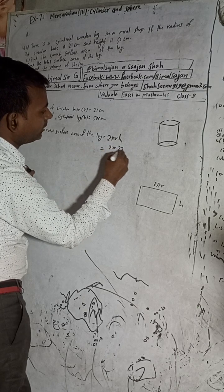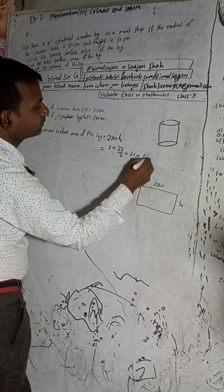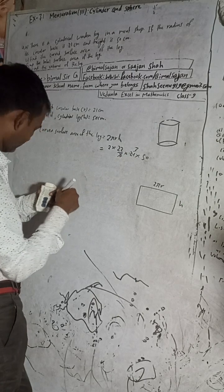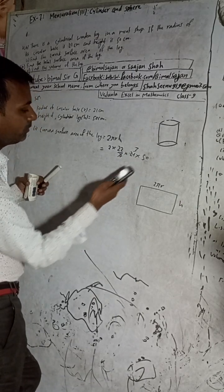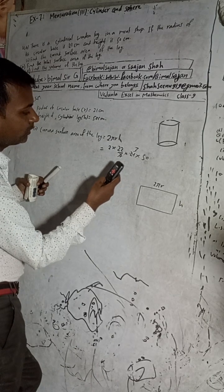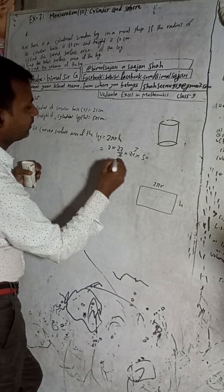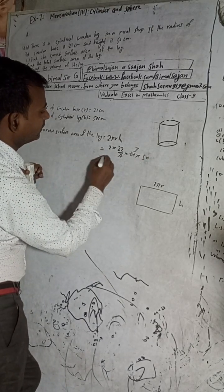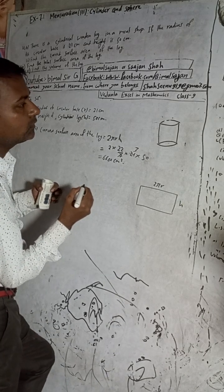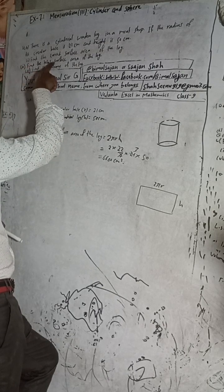So curved surface area = 2πrh = 2 × (22/7) × 21 × 50. Cancelling 7 into 21 gives 3, so we get 2 × 22 × 3 × 50 = 44 × 3 × 50 = 6600. The curved surface area is 6600 cm².